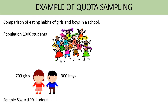The example is a comparison of eating habits of girls and boys in a school. Let's assume the population is 1000 — there are 1000 students in total, out of which 700 are girls and 300 are boys. As a researcher, if I want to collect data from 100 students, my sample size would be 100. We have two homogeneous mutually exclusive subgroups based on gender: girls and boys. This is the first step of quota sampling.